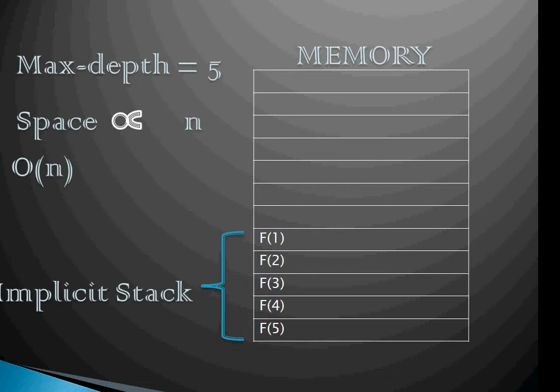So in this particular case the space required by the program is directly proportional to the input n. So we say that this is an order of n algorithm in terms of space complexity. So now this stack grows to a maximum of n units in this particular example.